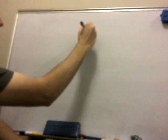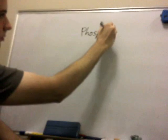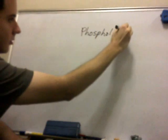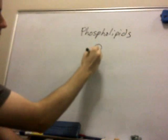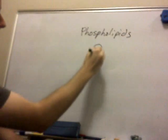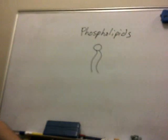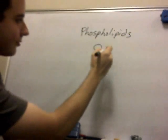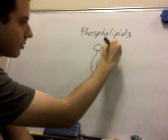The basic structure of a phospholipid has two parts: a hydrophilic head and a hydrophobic tail, which consists of hydrocarbons.